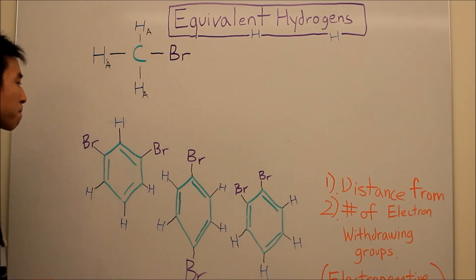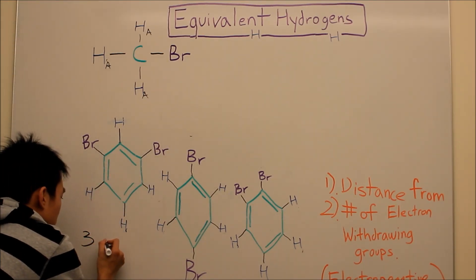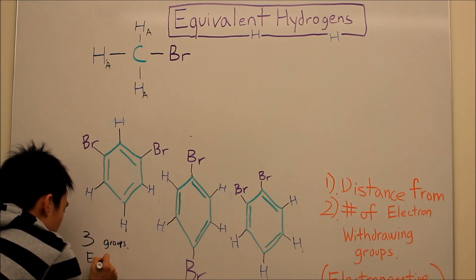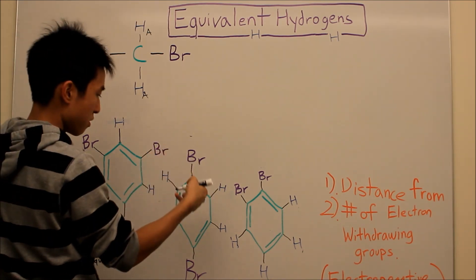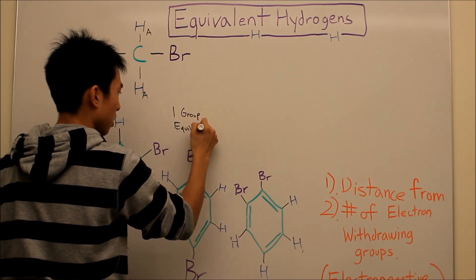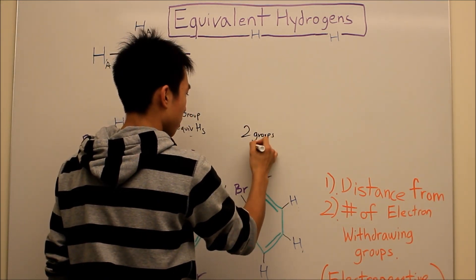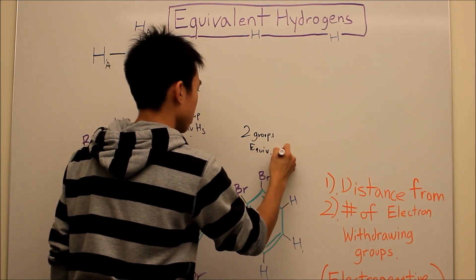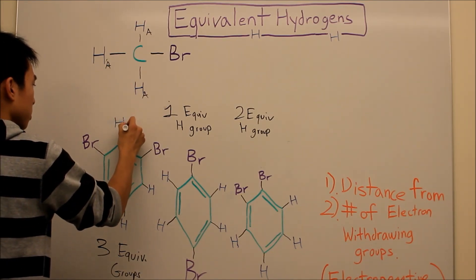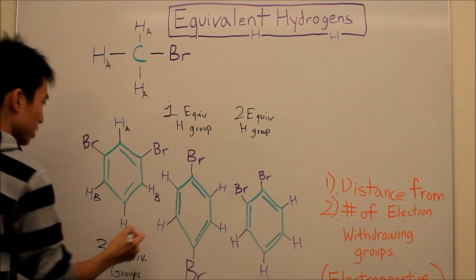The answer is, in this molecule here, you have three groups of equivalent hydrogens. Here you have one group of equivalent hydrogens, and in here you have two groups of hydrogens. The reason why this is three is because I'll draw in the groups. This is one group, this is the second group, these guys Hb, and it's Hc.